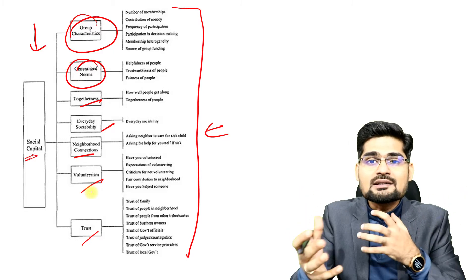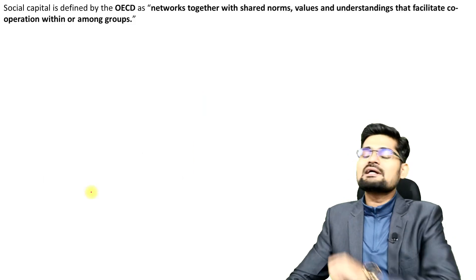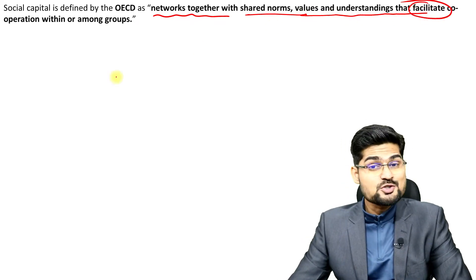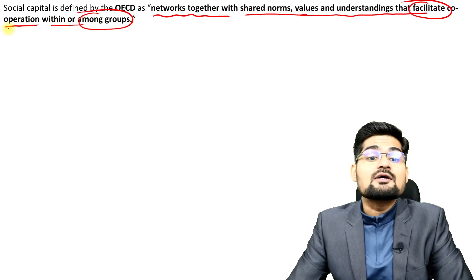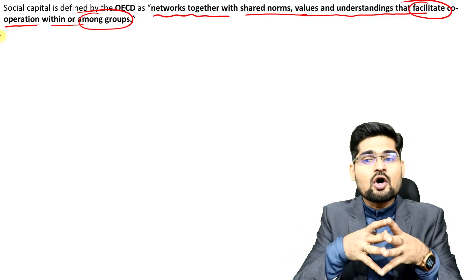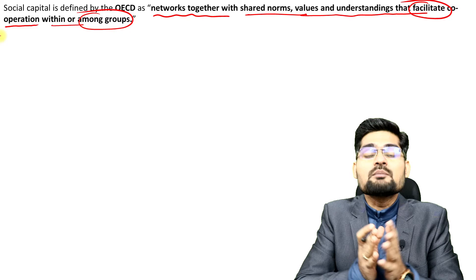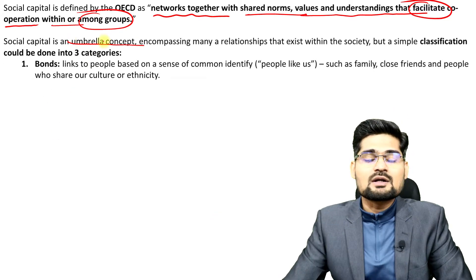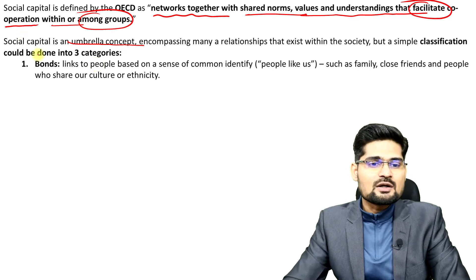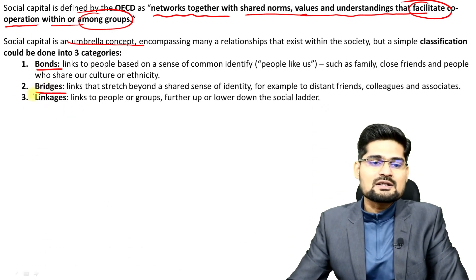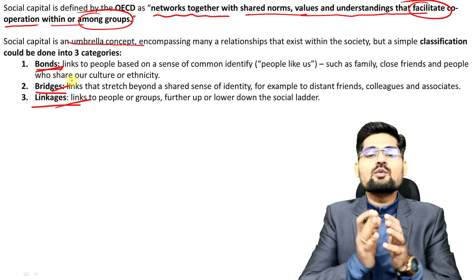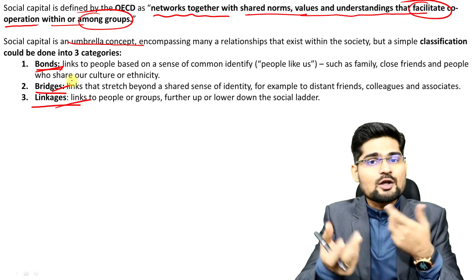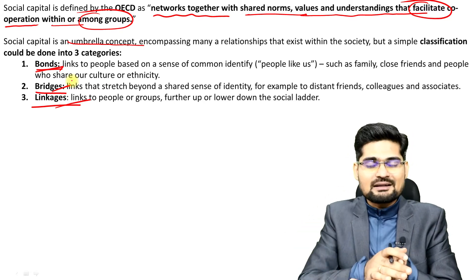Unless we have cohesion, integration, and interrelational aspects, there is no social capital. One more definition: networks together with shared norms, values and understandings that facilitate — the key word here — that facilitates the operation within or among groups. For this facilitation of norms, values and understandings, integration is very important, and unless this happens a country cannot progress. Social capital is an umbrella concept involving three important concepts within it: bonding, bridging, and linkages. Bonds, bridges and linkages are what people need to make with their own community and also with people above them in hierarchy — socially, economically, position- and power-wise — and also at their own level.